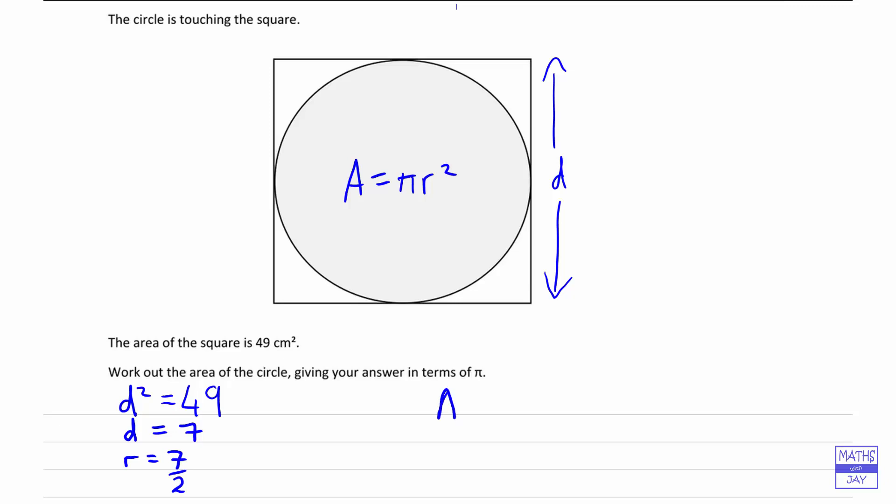And then looking at the area of the circle, that's going to be pi times 7 over 2 squared.